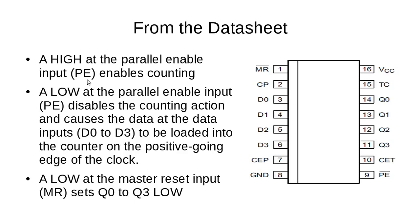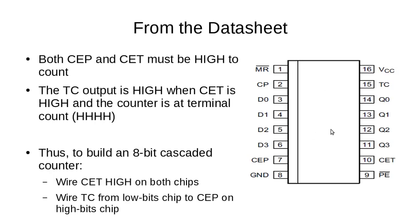So how do we get it to count? If we ever need to reset the value in the chip back to 0, we can drive MR low and that will reset the contents back to all zeros. To make it act as a counter we drive both CEP and CET high, and with both of them high it actually acts as a counter.